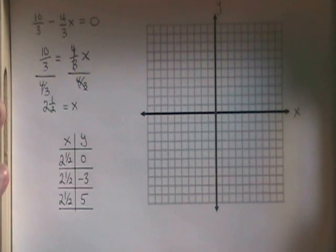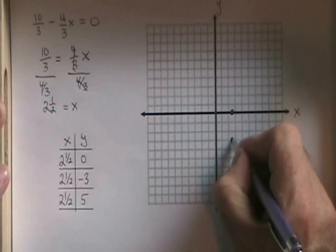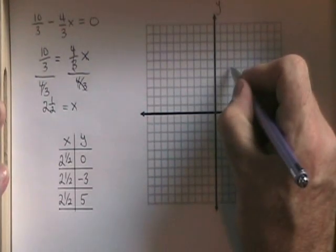Now I graph these points. 2 and a half, 0 is here. 2 and a half, negative 3 is here. And 2 and a half, 5 is here.